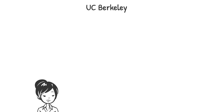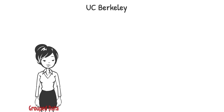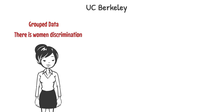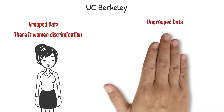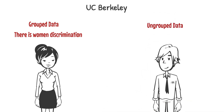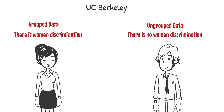Now we are in front of two valid and opposite arguments. The first argument shows that the total admission percentage of men is greater than women, so there is women discrimination. The other argument shows that the admission percentage of women is greater than men in 4 departments out of 6, so there is no women discrimination.